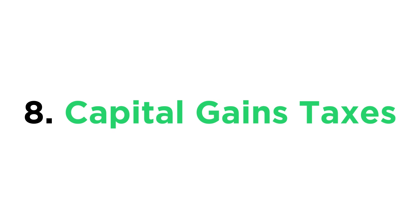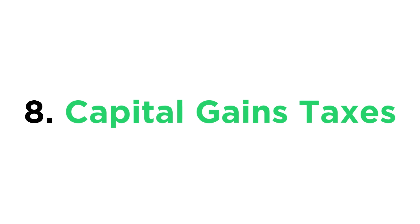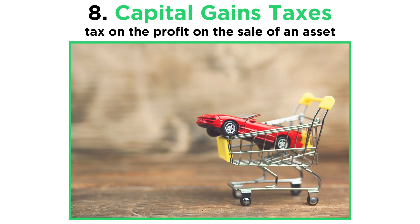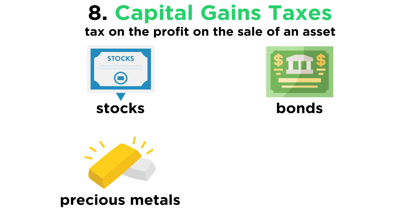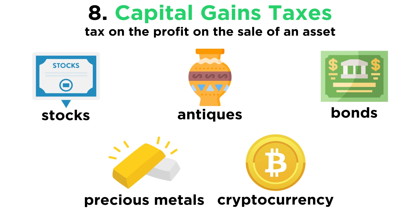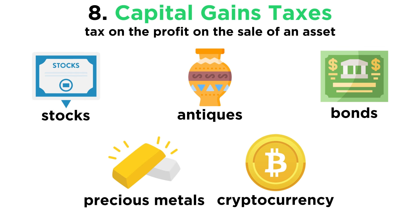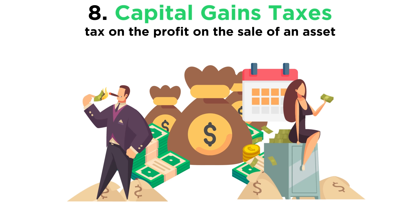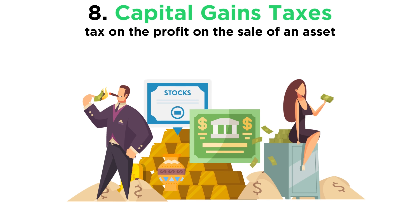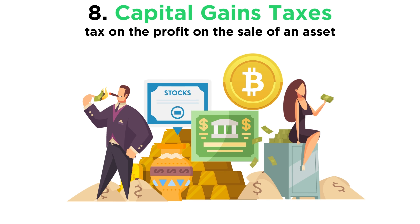Number eight: capital gains taxes. A capital gains tax is a tax on the profit on the sale of an asset. Often this is through the sale of stocks, bonds, precious metals, or cryptocurrency. Even antiques can be subject to a capital gains tax if you make enough money from them. The capital gains tax rate depends on how much profit you gained in a given year. It is much more common than a wealth tax, since it is easier to keep track of. However, wealthy individuals often simply hold on to assets — they don't sell them — and this is why some argue a wealth tax might be a better way to generate more money for governments.